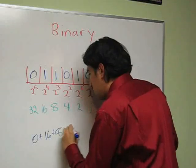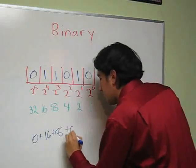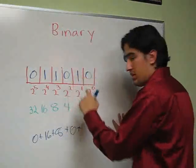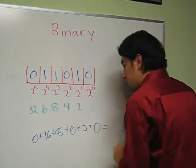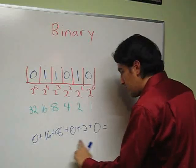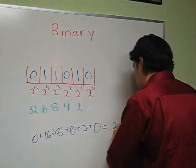Plus 0 times 1, which equals 16 plus 8 plus 2 is 26.